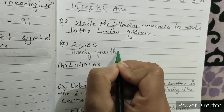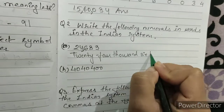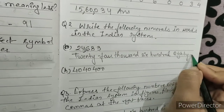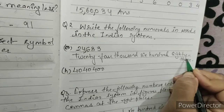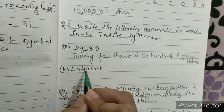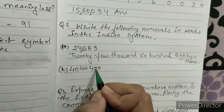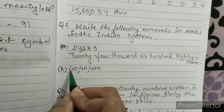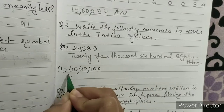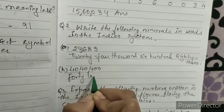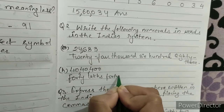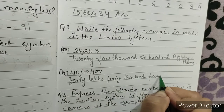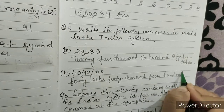Part c) 40,40,400. Ones, tens, hundreds, comma, thousands, ten thousands, comma, lakhs, ten lakhs. The answer is forty lakh forty thousand four hundred.